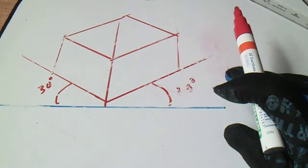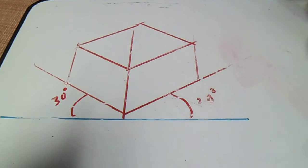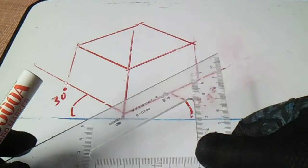So this is it, we have now a box using this 30 by 60 triangle.